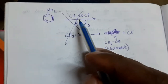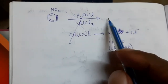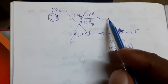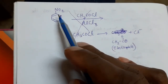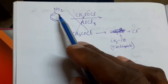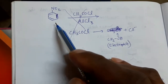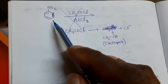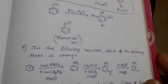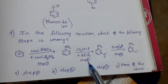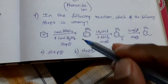Nitrobenzene treated with CH3COCl in the presence of AlCl3 cannot give a product. Friedel-Craft reaction does not take place because NO2 is an electron-withdrawing group that deactivates the benzene ring. So electrophilic substitution is not possible. Therefore, Step 2 is the wrong step — Option B is the answer.